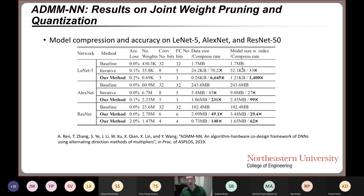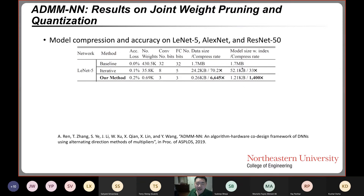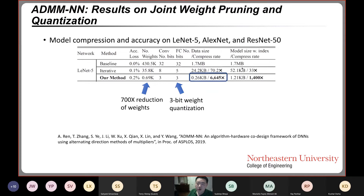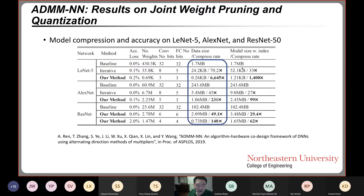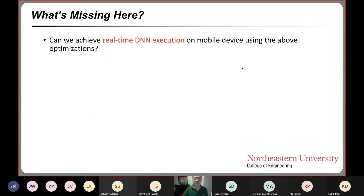For joint weight pruning and quantization results, on LeNet we can reduce the number of weights by 700 times while using an average of 3 bits for weight quantization, giving an overall weight reduction rate of over 6,600 times — two orders of magnitude higher compared with prior work. For ResNet, we can reduce by 100 to 200 times without accuracy degradation. However, this is non-structured pruning, where weights can be arbitrarily reduced.